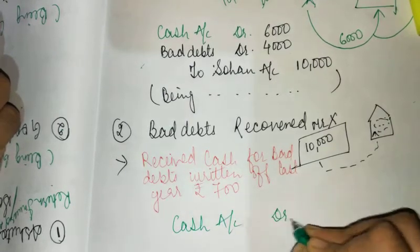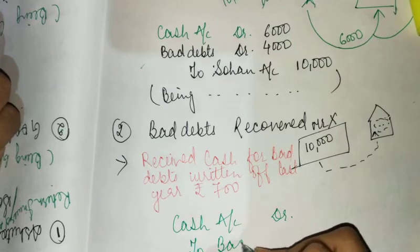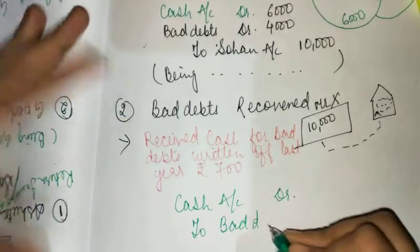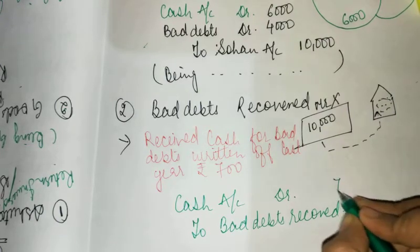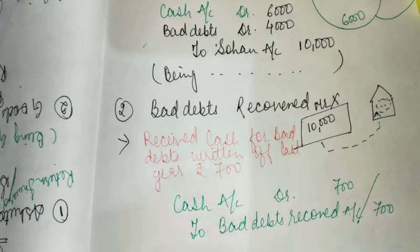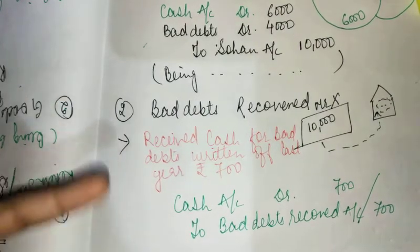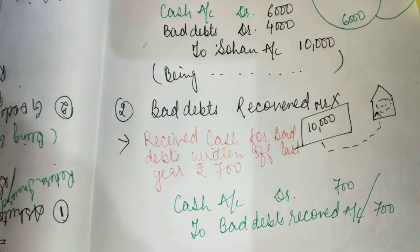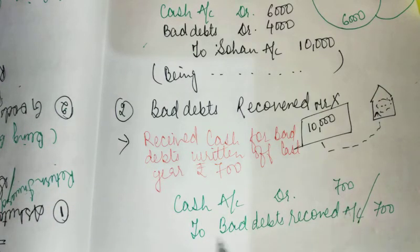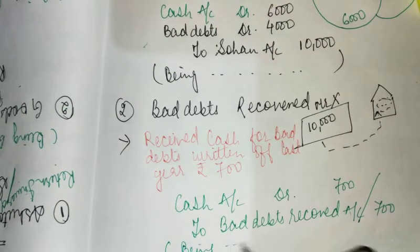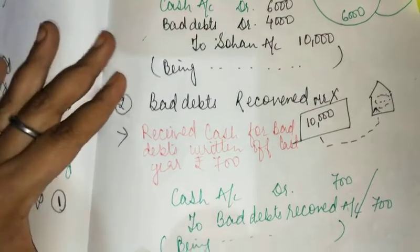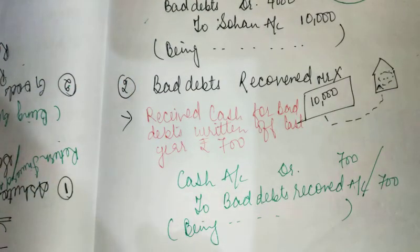The entry for Bad Debts Recovered is: Cash Account Dr to Bad Debts Recovered Account. Cash comes in so it is debited, and Bad Debts Recovered is income so it is credited. Narration: Being Rs. 700 written off as bad debt recovered.